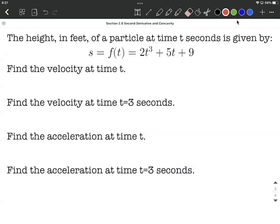We're told that the height of a particle is given by this function: f of t equals 2t cubed plus 5t plus 9.